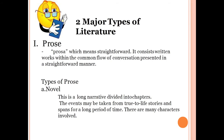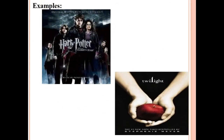The first major type is prose, from the Latin 'prosa,' which means straightforward. It consists of written works in a common flow of conversation presented in a straightforward manner. The first type of prose is the novel — a long narrative divided into chapters. The events may be taken from true-to-life stories and span a long period of time, with many characters involved. Examples include Harry Potter and Twilight.